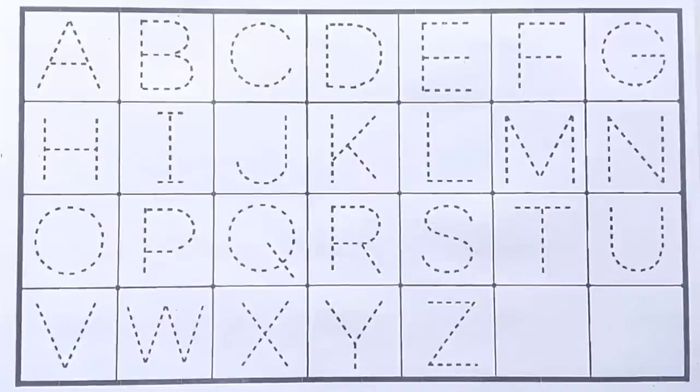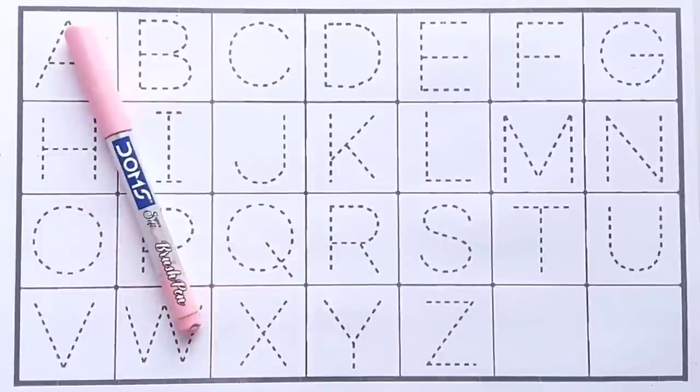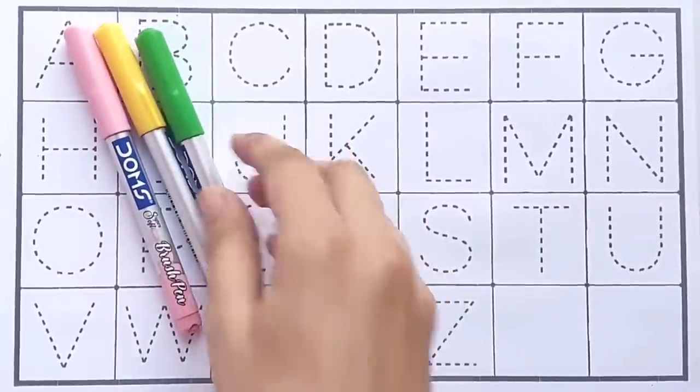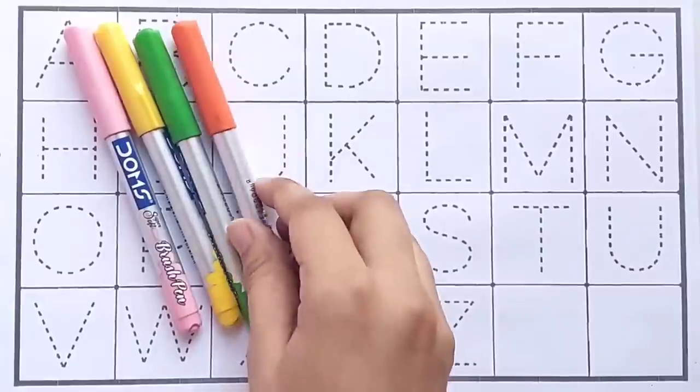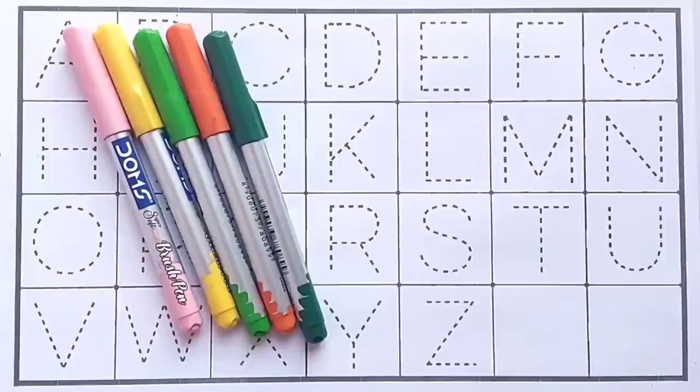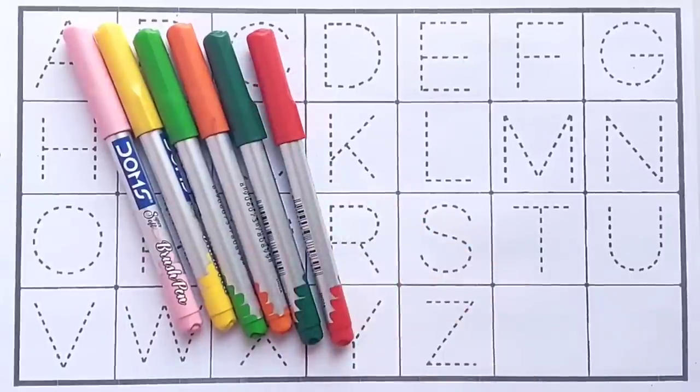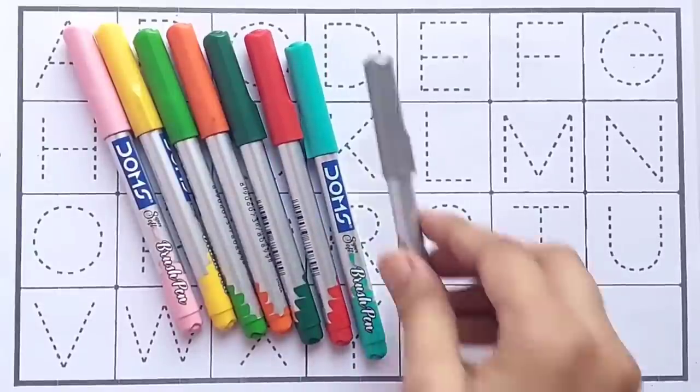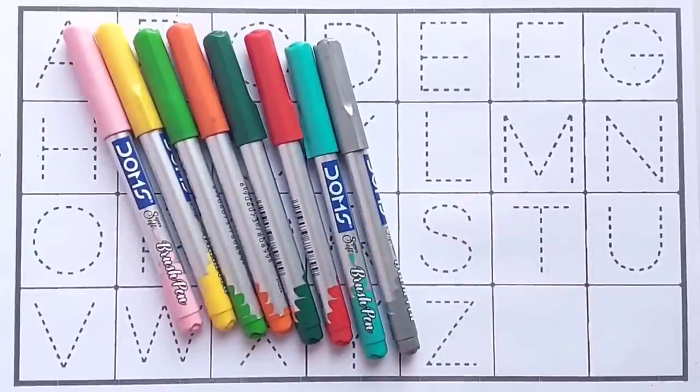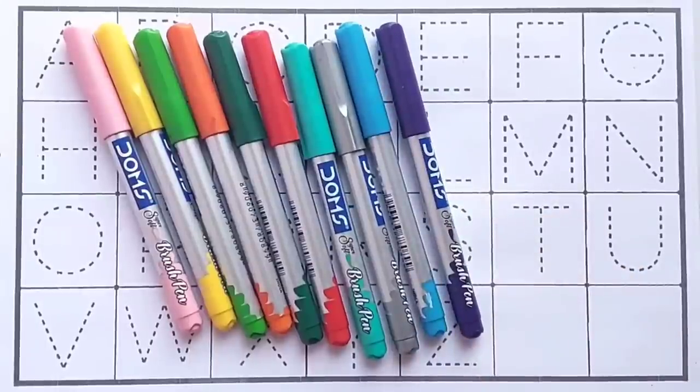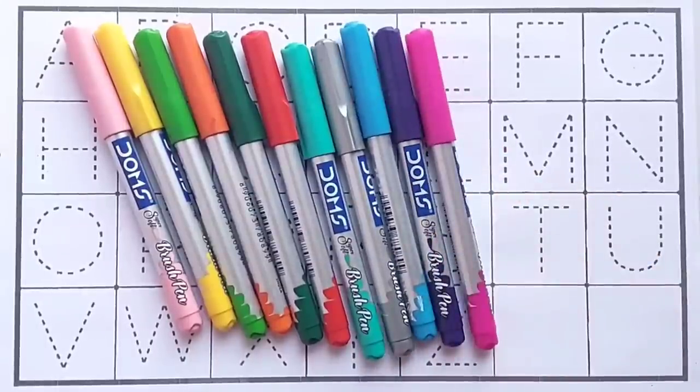Hello kids, let's learn ABC and colors. Light pink color, yellow color, light green color, orange color, green color, red color, sea green color, silver color, sky blue color, purple color, pink color.